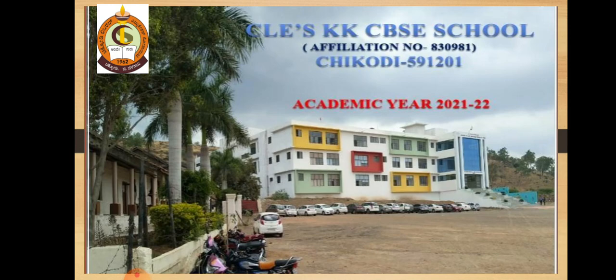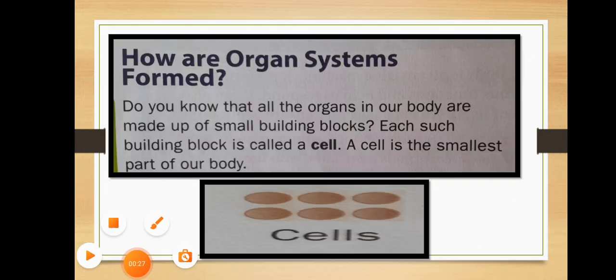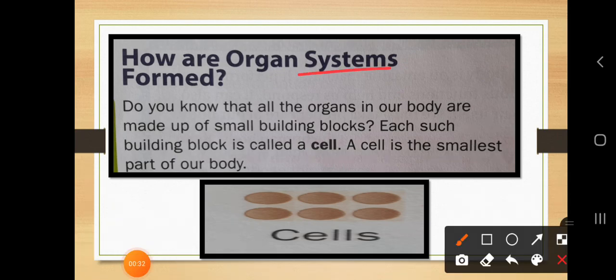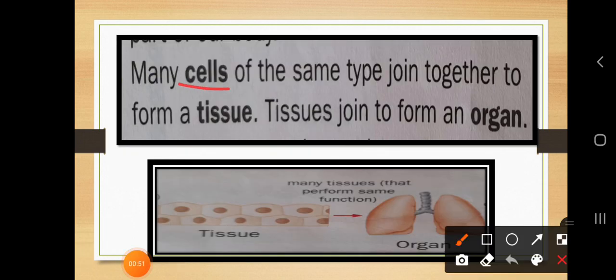Let's recall what we have learned in the last class. The smallest unit of life, or you can say the smallest part of our body — our body is made up of cells. This is the basic unit of the body. When cells of the same type combine together, they are called tissues.